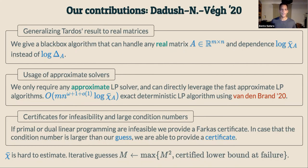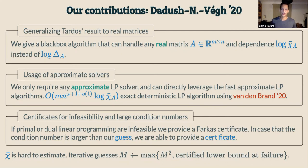We always provide certification in case of infeasibility or if our condition number is larger than expected. For primal or dual infeasibility, we return a Farkas certificate. In case the condition number is larger than we guessed — and recall that Tunschel showed this is hard to approximate — we reiterate with larger guesses. If our guess is too low, we certify that by a circuit, a concept we will see shortly.